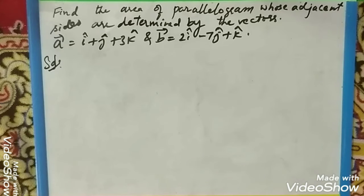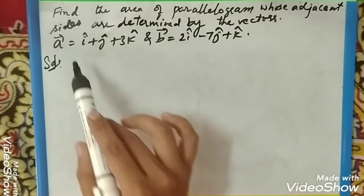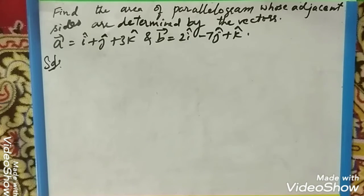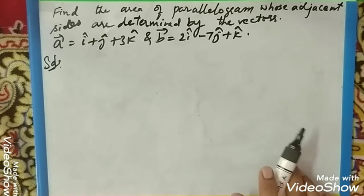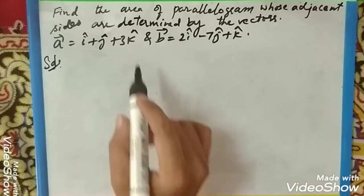The problem is to find the area of a parallelogram whose adjacent sides are determined by the vectors a = i + j + 3k and b = 2i - 7j + k. This is a two marks question in the examination and is very important.